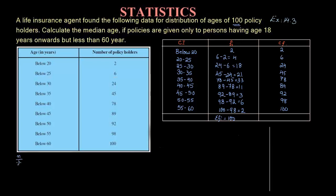For finding the median class, we need n/2. What is n? It is Σfi, which is 100. So 100 divided by 2 equals 50. Now I need to search for 50 in the cumulative frequency column and find the value just greater than 50. There is no 50, so the value just greater than 50 is 78. So the median class is 35 to 40.